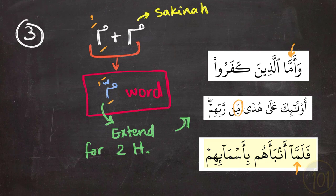Notice that in the first two examples, we have Meem that has Shadda on top of it. And in both examples, we extended the Meem for two Harakat. In the third example, we have the same thing, and we also have a Meem that is followed by a Ba'. So we extended both of them for two Harakat.